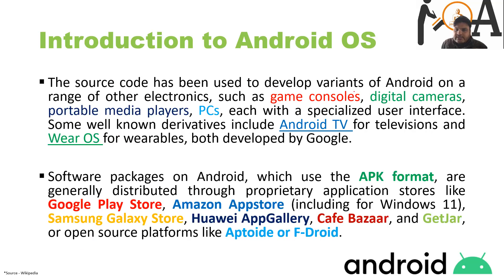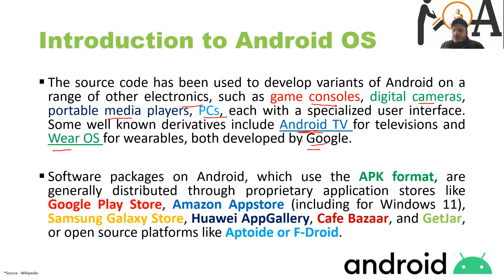The source code has also been used to develop variants of Android on a range of other electronics, such as game consoles, digital cameras, portable media players, and PCs, each with a specialized user interface. Some well-known derivatives include Android TV for televisions and Wear OS for wearables, both developed by Google. You may have used Android TV to control your smart TV through mobile applications.